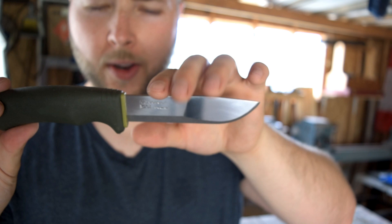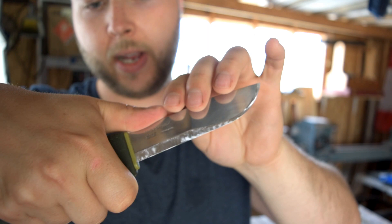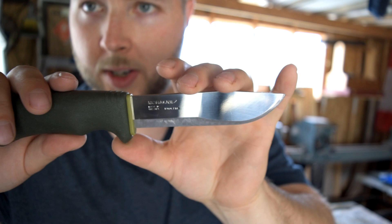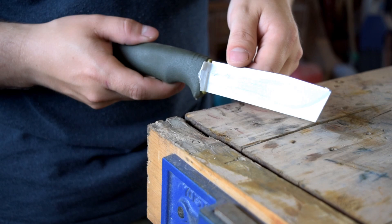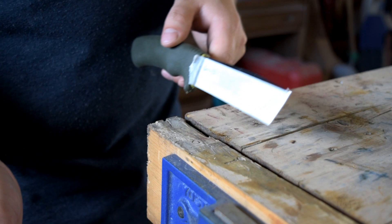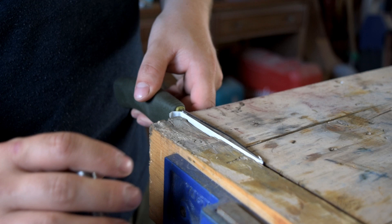So we're going to correct that, we're going to reprofile this whole thing, take it right down where it should be. Another thing we need to do is we have a completely rounded spine. He wants the spine sharpened to strike sparks on a ferro rod, so we're going to do that first because I don't want to be working with that when I have a razor sharp edge. You're going to want something to fix it in position there.